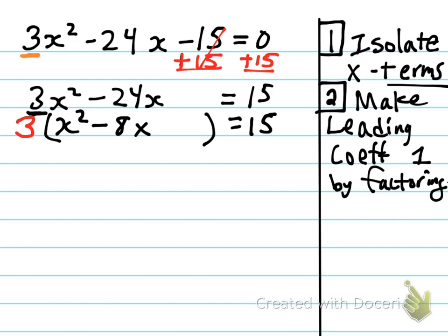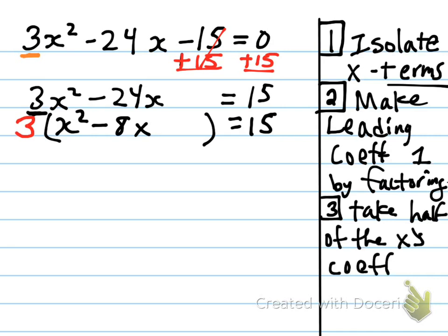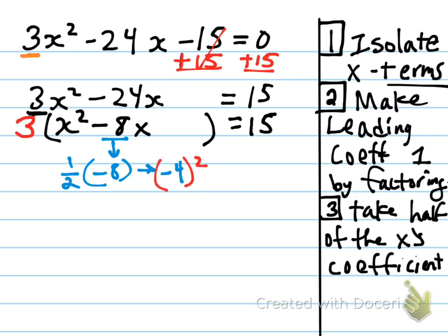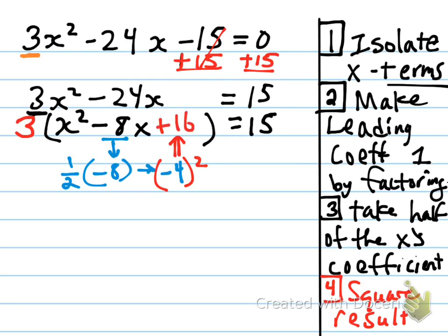Now the steps are pretty much like they were, except for a key difference I'll mention in a second. Step 3: take half of the x's coefficient. That's what we did last time. So you take this value, which is negative 8, and cut it in half — multiply by one half — and that gives me negative 4. And the next step is to square it. Step 4: square the result. So negative 4 times itself gives you positive 16. I'll do that in green, just to show it's very much the same step. And here is the key difference — this is what makes it a lot more difficult. I'm not done with this step yet.